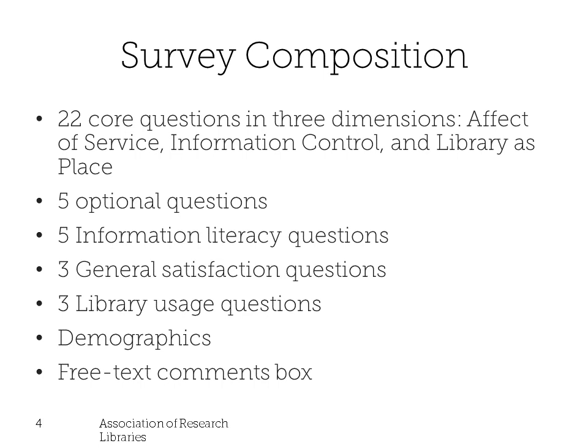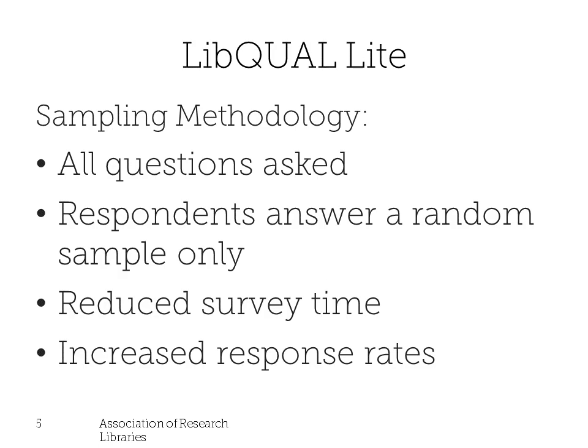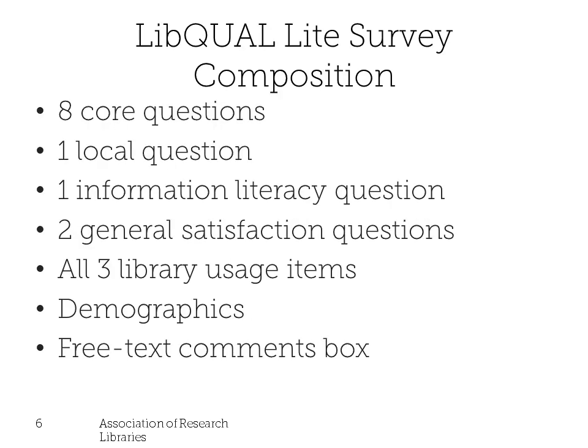There are 22 core questions, five optional questions, five information literacy questions, three general satisfaction questions, three library use questions, and up to three demographics questions, as well as a free text comments box. In 2010, we introduced a shortened version called LiveQOL Lite. You can select anywhere from zero to 100% lite, and respondents will randomly receive either the short or long survey. The median completion time for the long survey is about ten minutes, and for the lite survey a little over five minutes. Each lite questionnaire includes eight core questions, one optional question, one information literacy question, two general satisfaction questions, three library use questions, all demographics questions chosen, and the comments box.